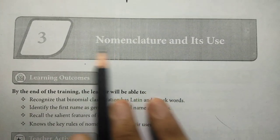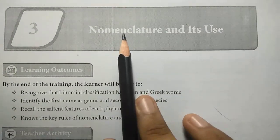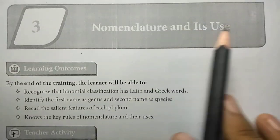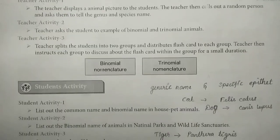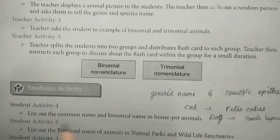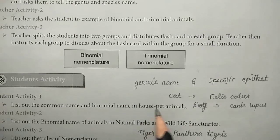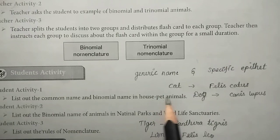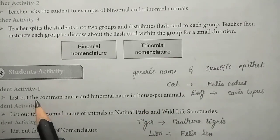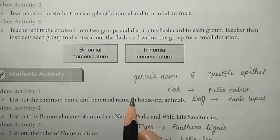Third lesson: Nomenclature and its use. Nomenclature is the naming of organisms — that means the name of the species. We will see the student activities and assessments, and the answers. Student activity: list out the common name and the binomial name in house pet animals.